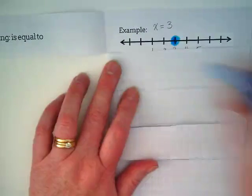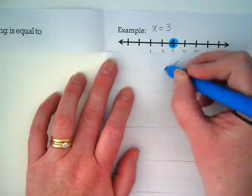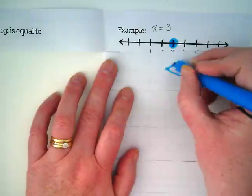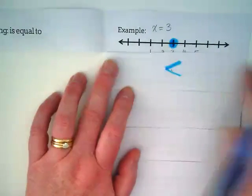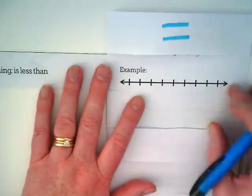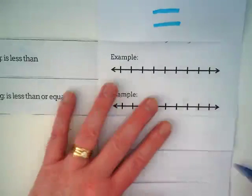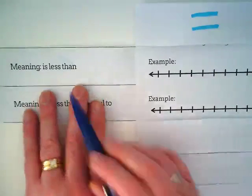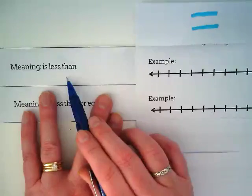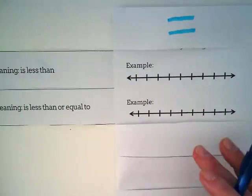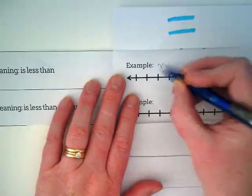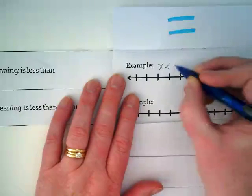We're going to do our second one, which is less than. I find that I need to open the second flap. I have room to write my numbers. What does it mean? It means is less than. Again, the example I want you to write is x is less than negative 1.